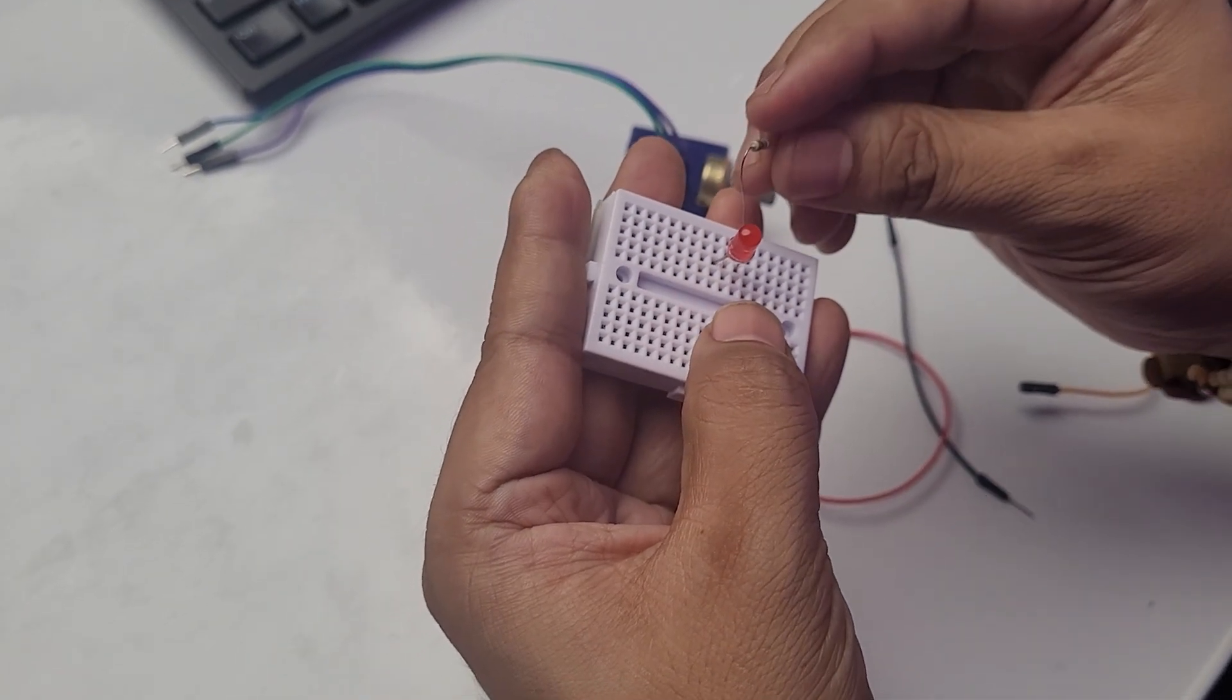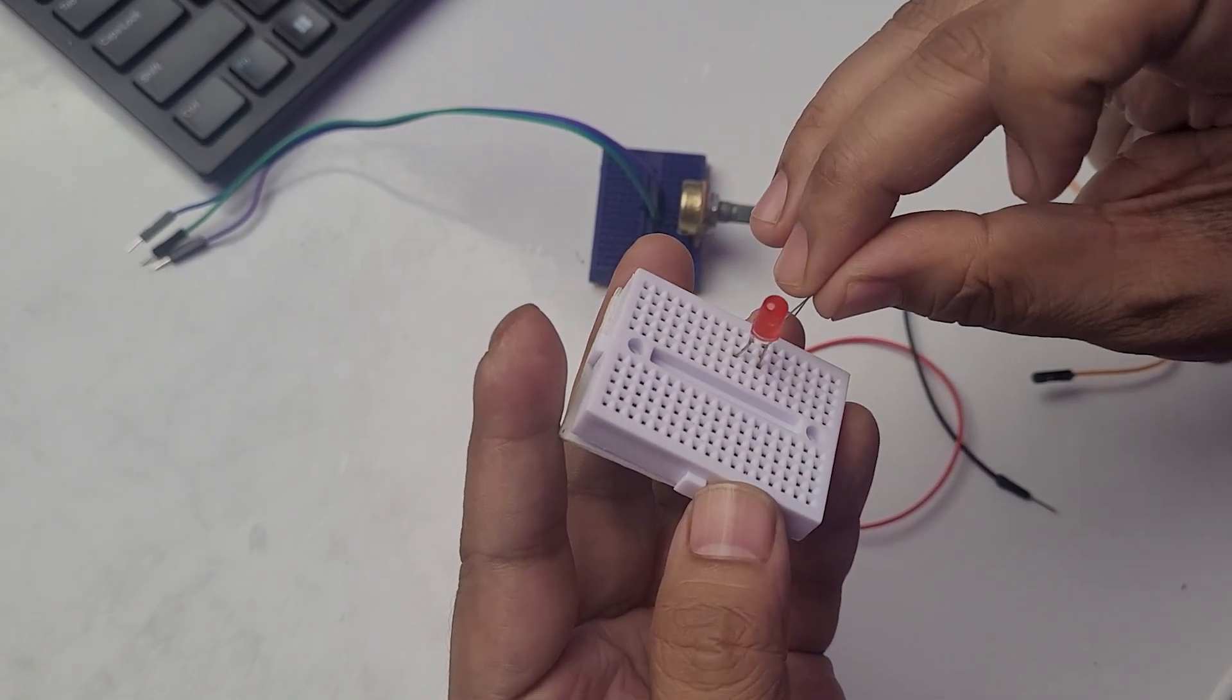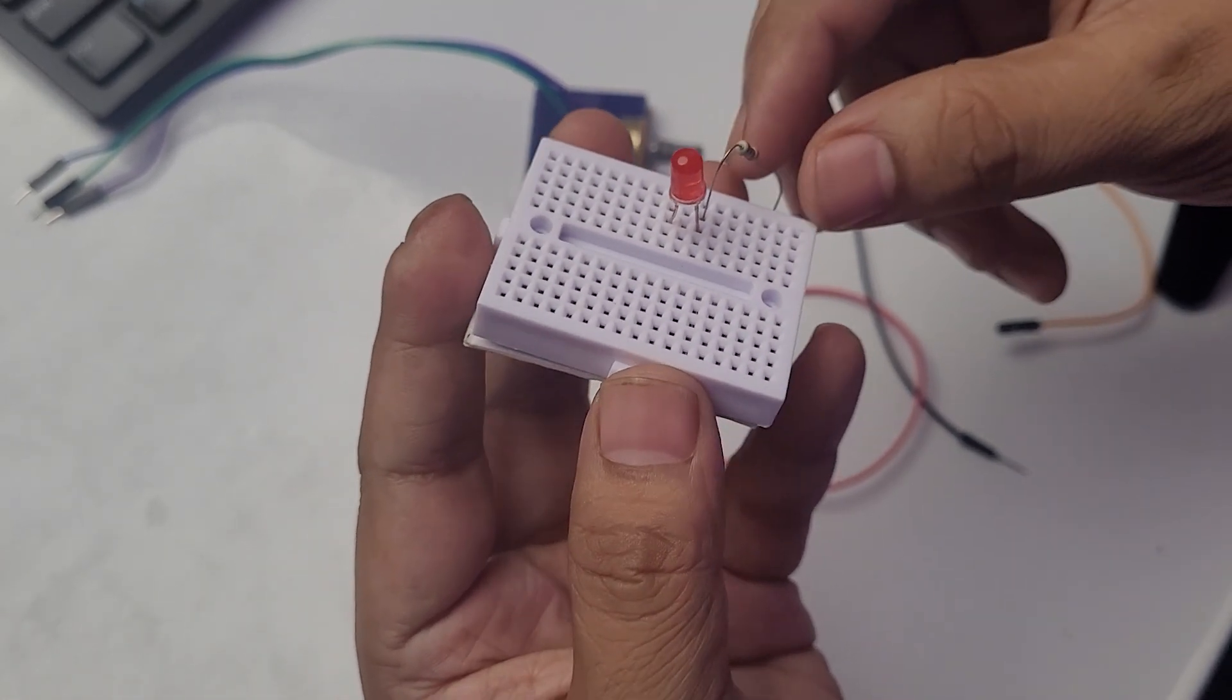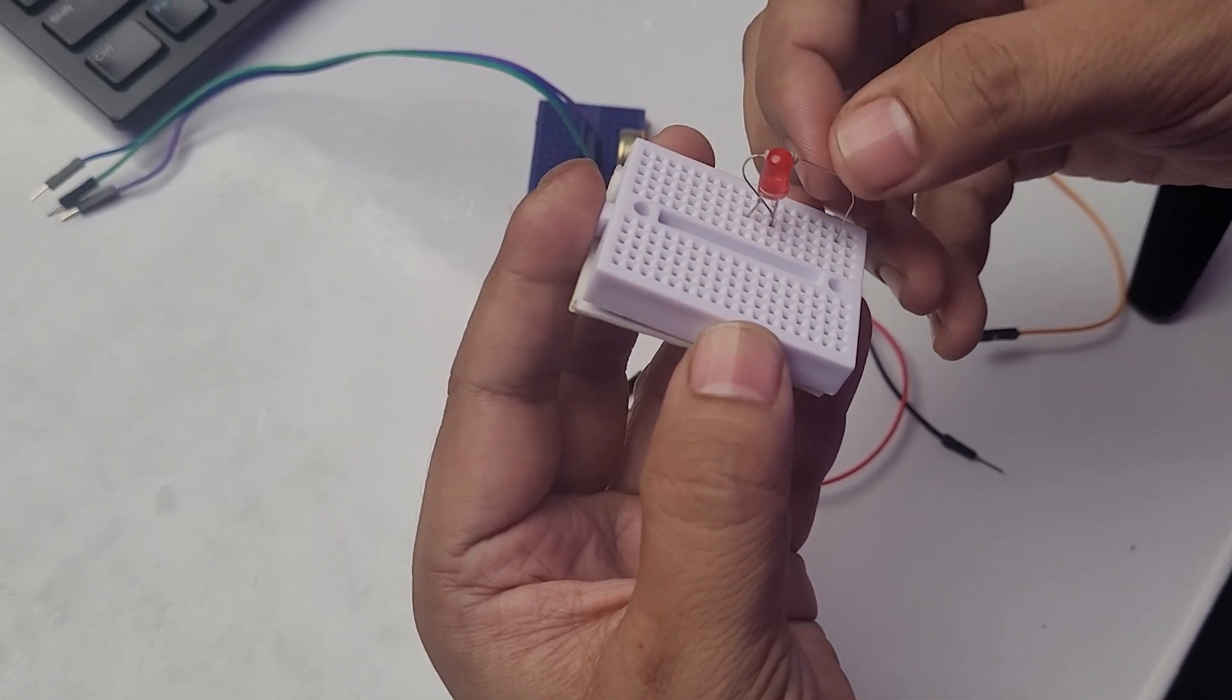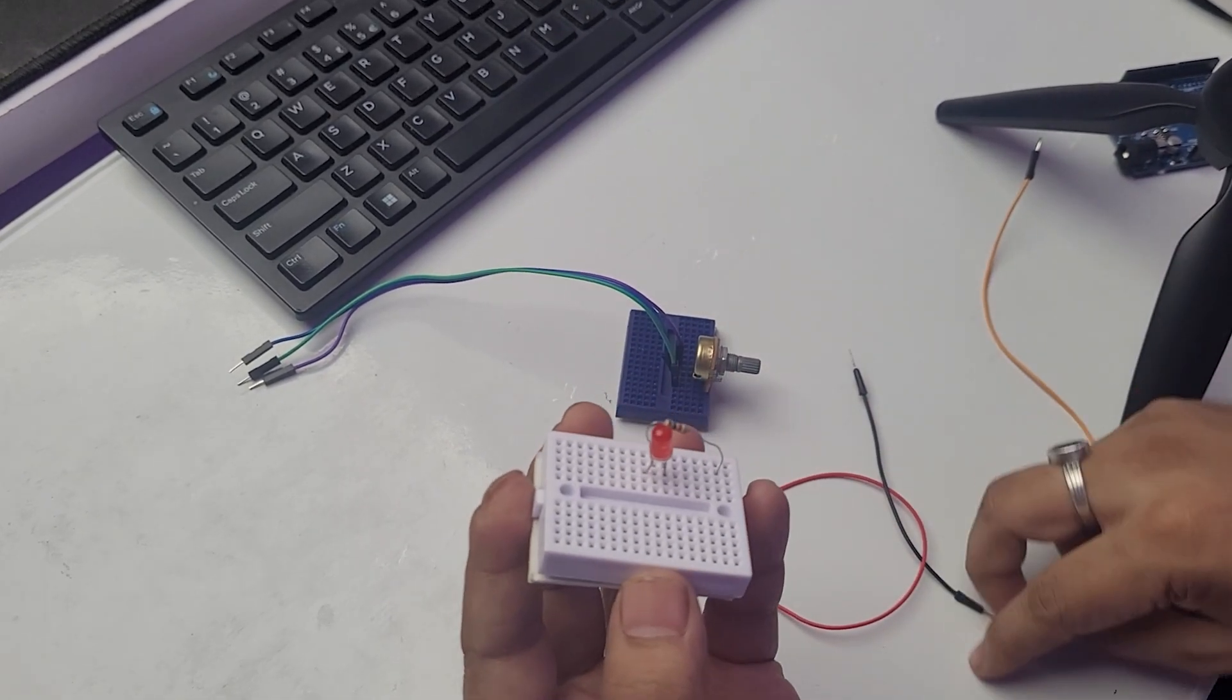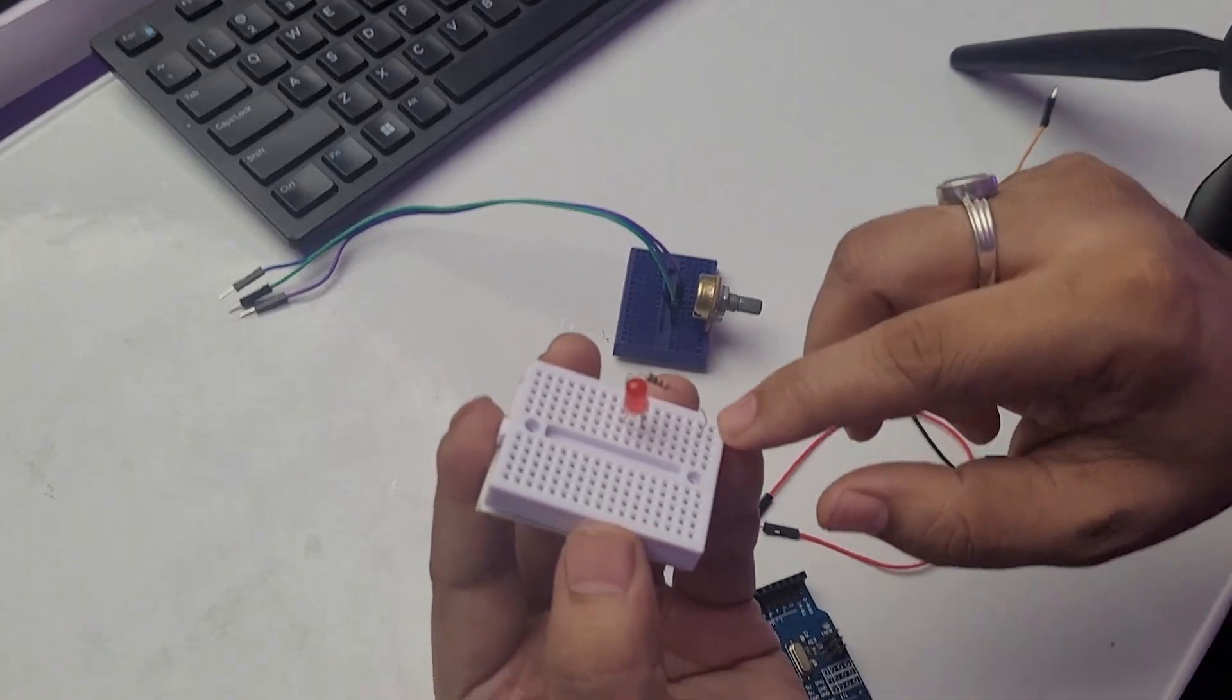This makes a common connection, which means that if I connect anything to this one, if I connect this resistor here, it will get automatically connected with this anode. So let me connect this resistor here in series. So this resistor is connected with this LED anode.